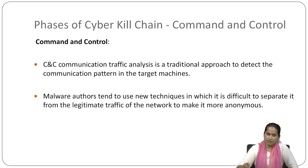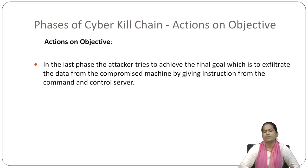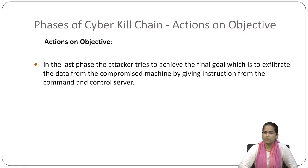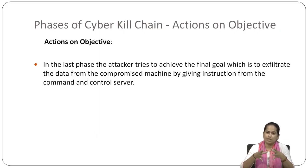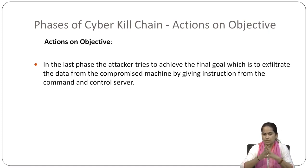This is what we have in command and control. The next and final step is actions on objective. In this last phase, the attacker tries to achieve the final goal, which is to exfiltrate the data from the compromised machine by giving instructions from the command and control server. Whatever objective they have, the actions they take on that objective is what this phase covers.